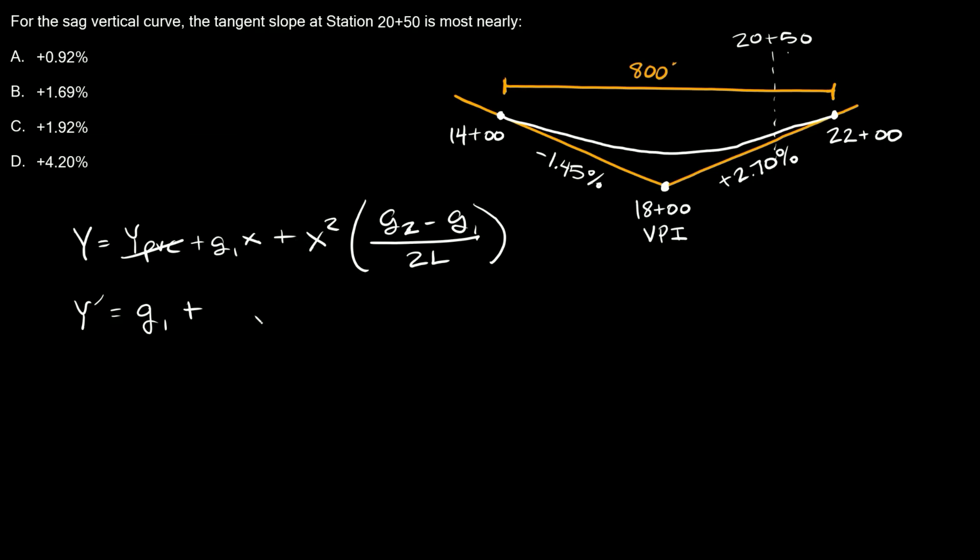And then here we have X squared, so remember, bring this down in front. So this is going to turn into 2X times this whole thing right here, which is G2 minus G1 all over 2L.